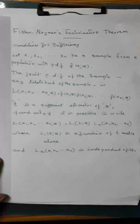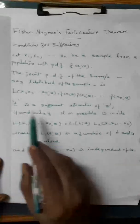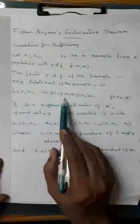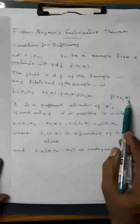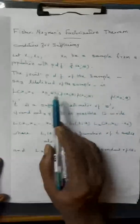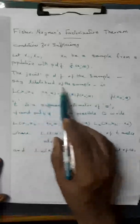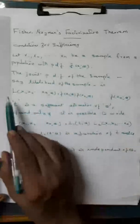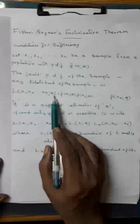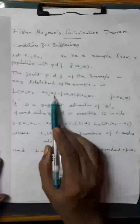So for showing T is a sufficient estimator of θ, first we have to calculate the joint probability density function of n samples. It is known as the likelihood of the sample, L(x1,x2,...,xn;θ).